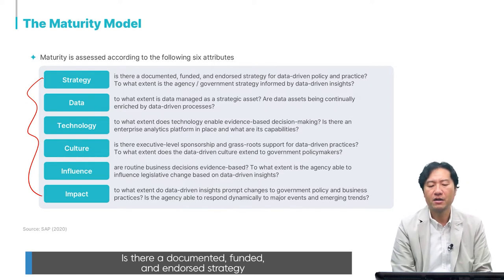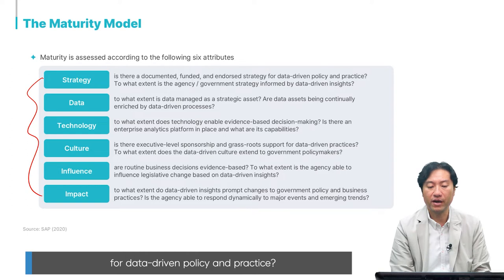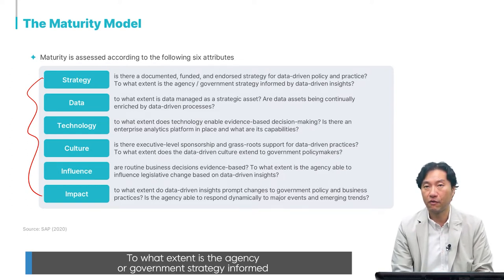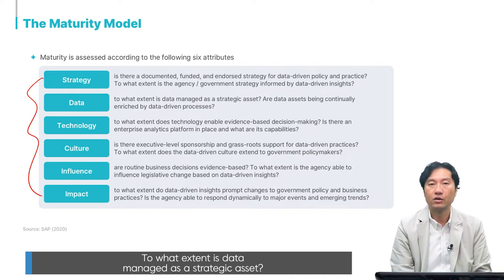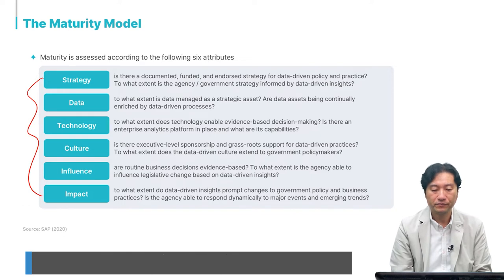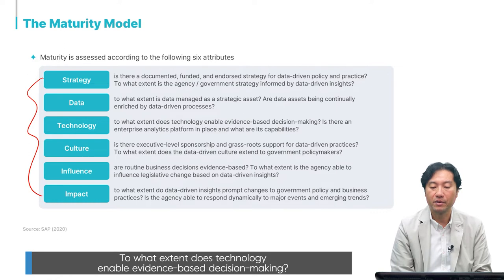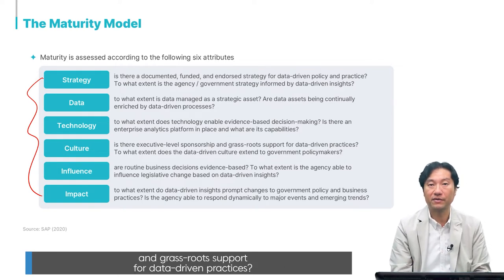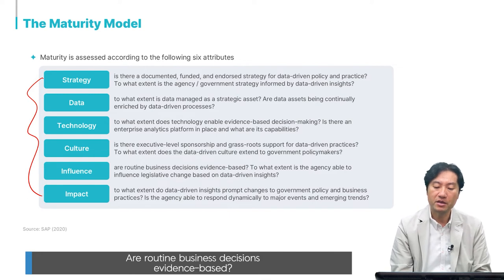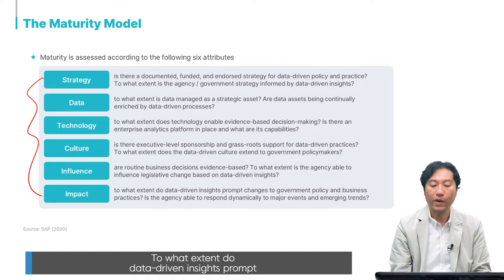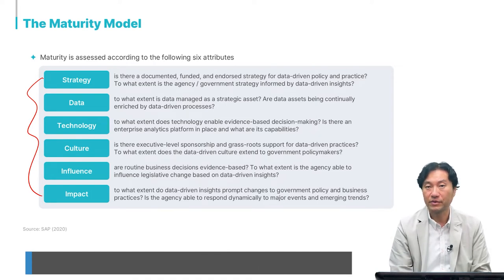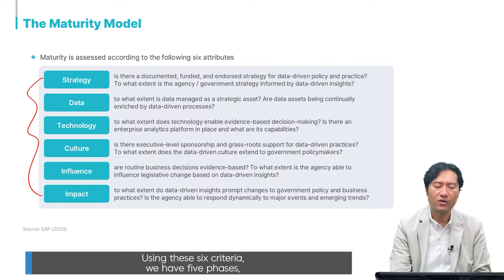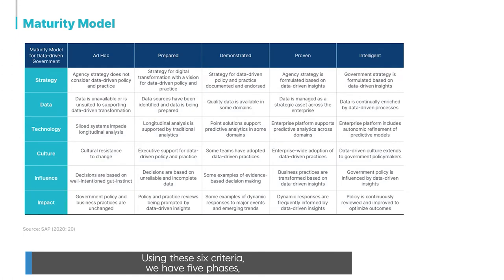The six criteria are: Strategy — is there a documented, funded, and endorsed strategy for data-driven policy and practice? Data — to what extent is data managed as a strategic asset? Technology — to what extent does technology enable evidence-based decision-making? Culture — is there executive-level sponsorship and grassroots support for data-driven practice? Influence — are routine business decisions evidence-based? Impact — to what extent do data-driven insights prompt changes to government policy and business practices?